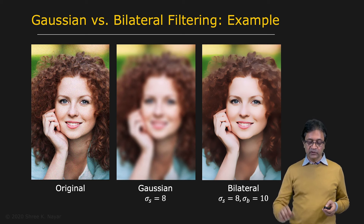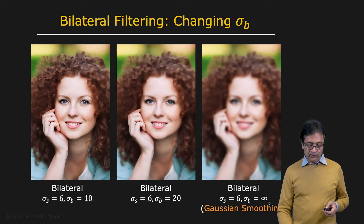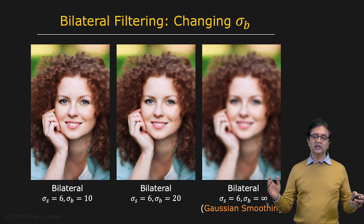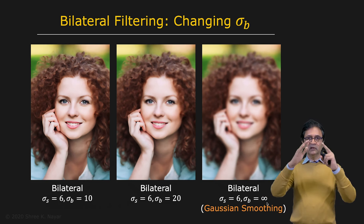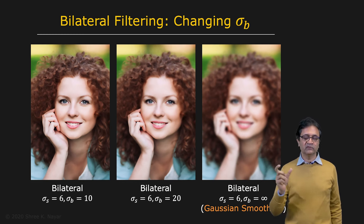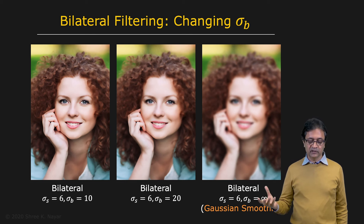Now let's ask what happens when you change the brightness sigma. We've held it at 10 all the way through. Let's say the spatial sigma is 6 and the brightness sigma is 10 — we get this result. If you increase the brightness sigma to 20, you get a little bit more blurring. As you increase it further and use a really large number, the brightness Gaussian becomes essentially flat and has no effect — the weight is 1 irrespective of the brightness difference between the center pixel and the neighboring pixel. Essentially, your bilateral filter begins to behave like a Gaussian filter, as expected.